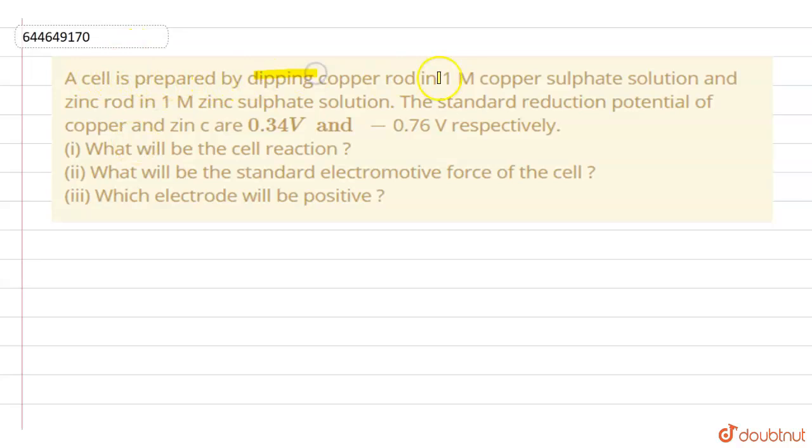A cell is prepared by dipping copper rod in 1 M copper sulfate solution and zinc rod in 1 M zinc sulfate solution. The standard reduction potential of copper and zinc are 0.34 volt and minus 0.76 volt. What will be the cell reaction? What will be the standard electromotive force? And which electrode will be positive?